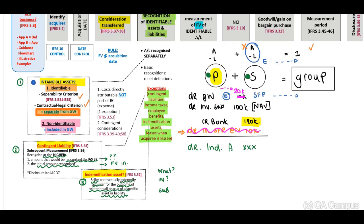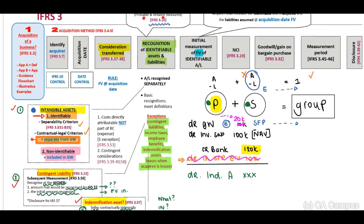To recap: an intangible asset that meets the identifiability criteria is recognised separately from goodwill; a contingent liability may be recognised separately from goodwill; and an indemnification asset may also be recognised separately from goodwill. On initial recognition, all of these should be recognised at fair value.